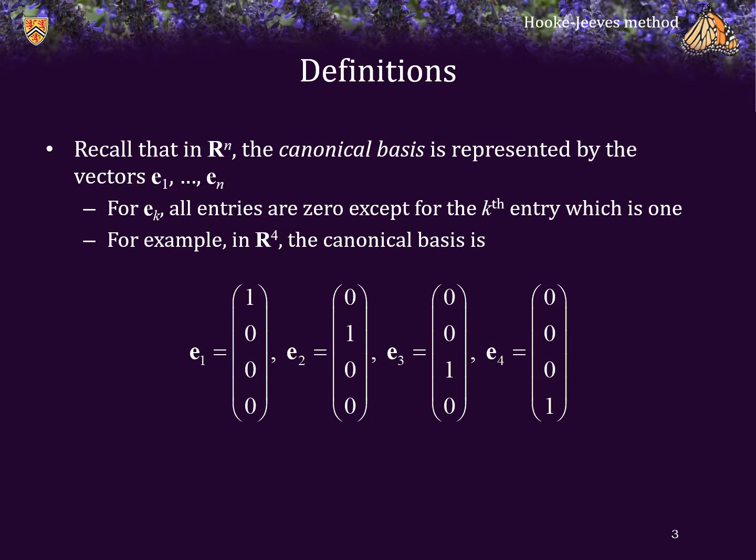Now, you will recall that for the bisection method, what we did is we guaranteed that there was a root on a particular interval. Suppose that you're aware that there is a unique local minimum on an interval from A0 to B0. We're going to develop a bracketed technique that attempts to reduce the width of this interval in a manner that is efficient.